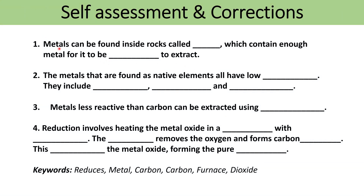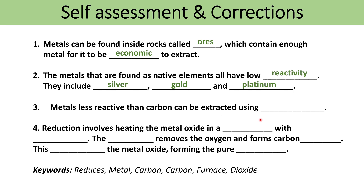Metals can be found inside rocks called ores, which contain enough metal for it to be economical to extract — or you could also say profitable. The metals that are found as native elements all have low reactivity, and they include silver, gold, and platinum. Metals that are less reactive than carbon can be extracted using reduction with carbon.